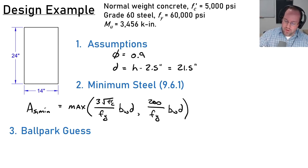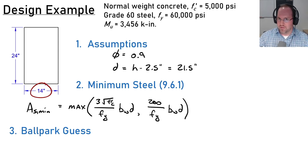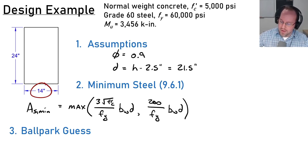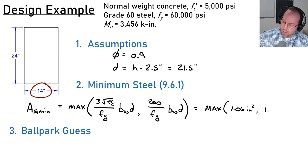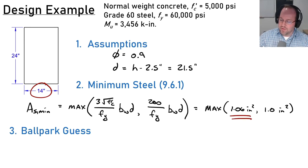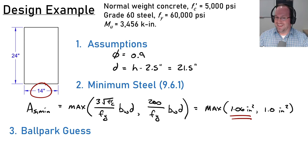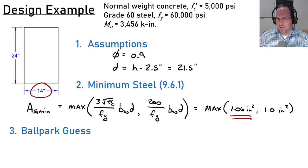For a rectangular beam, the web width bw equals the overall width of 14 inches. Plugging in, the minimum is the maximum of 1.06 in² or 1.00 in², so the minimum area of steel is 1.06 in². Regardless of the design, at least that much steel is required.